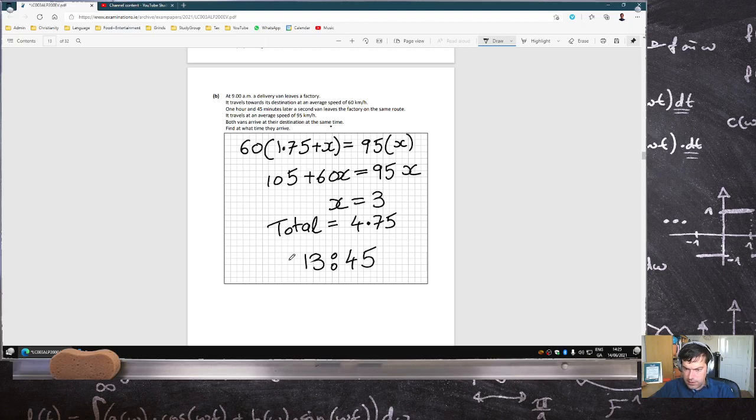95 times 3 is 285. And 60 times 4.75 is 285. So the distance is 285 kilometers.